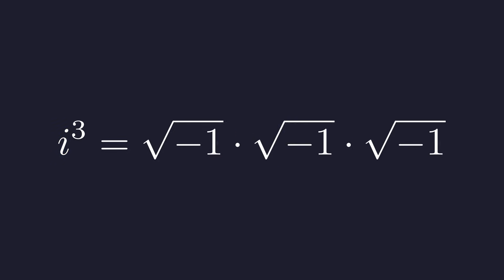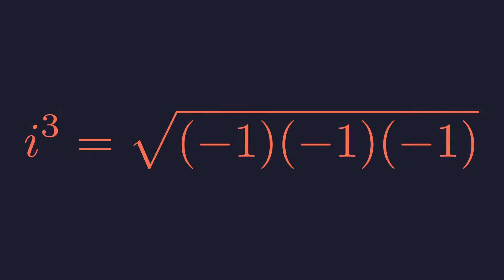So we have three square roots of negative 1 all multiplied together, and this is where things go wrong. The next step combines all three radicals under a single square root. It takes all three negative 1s and puts them under a single radical.